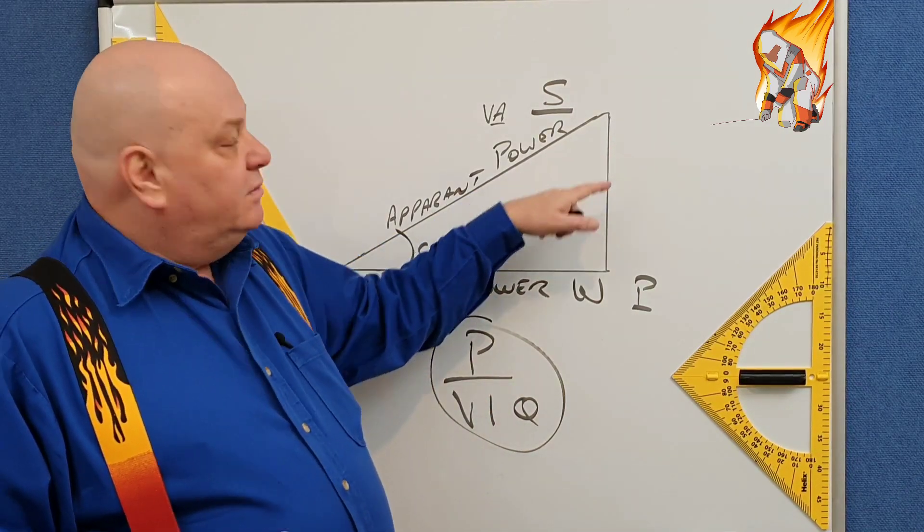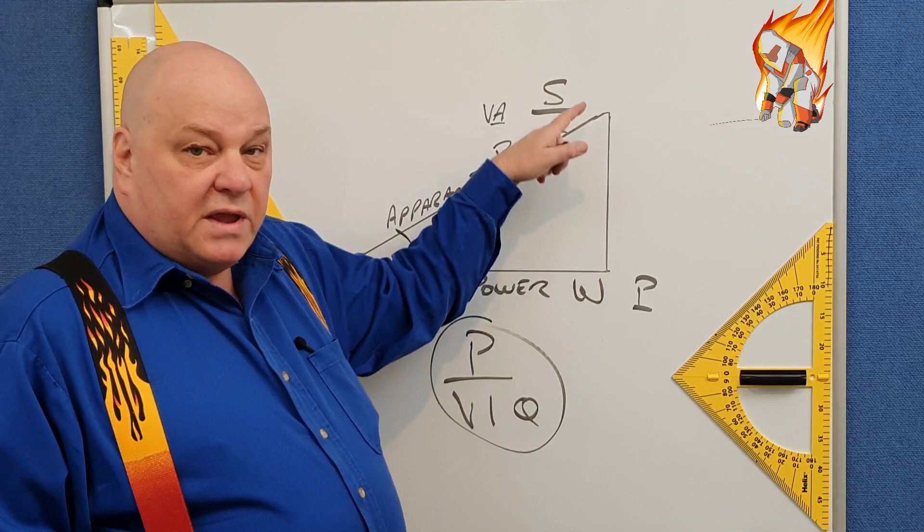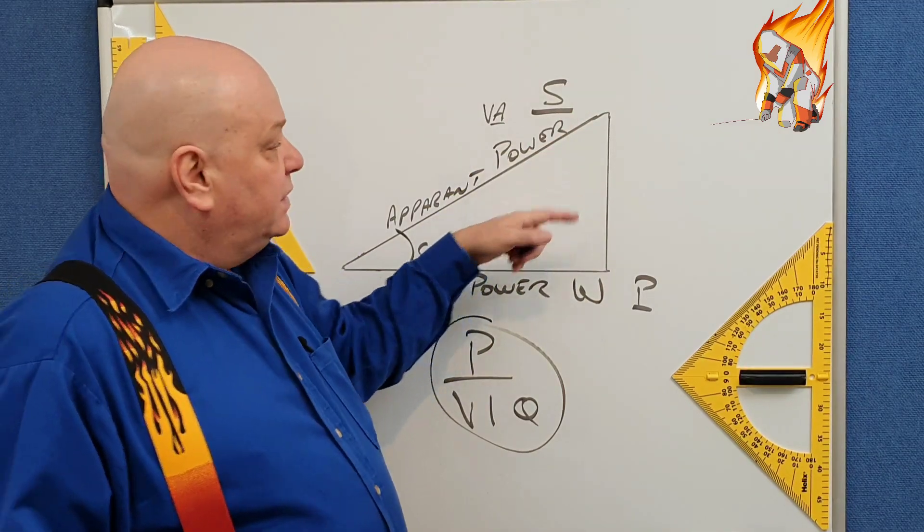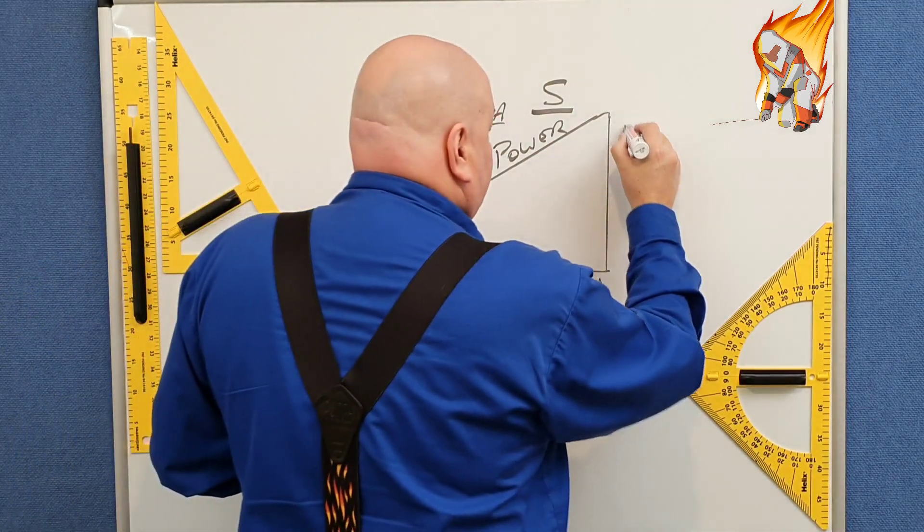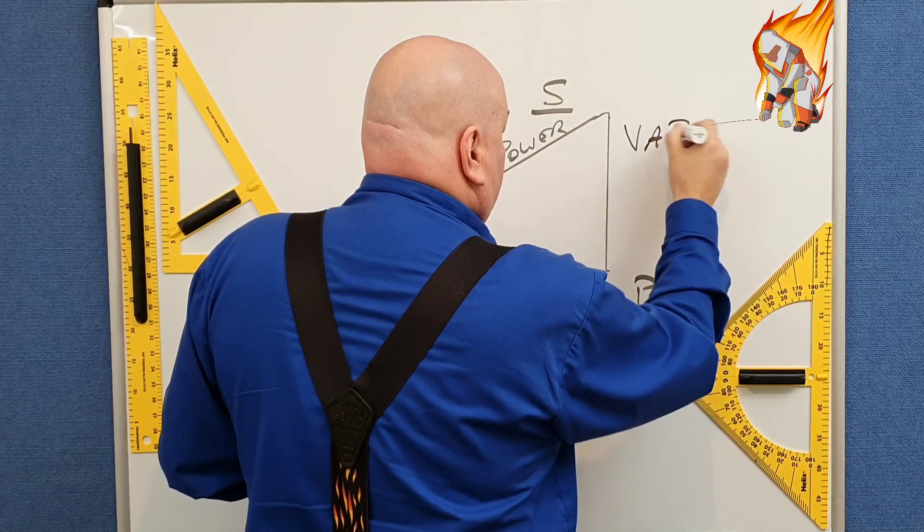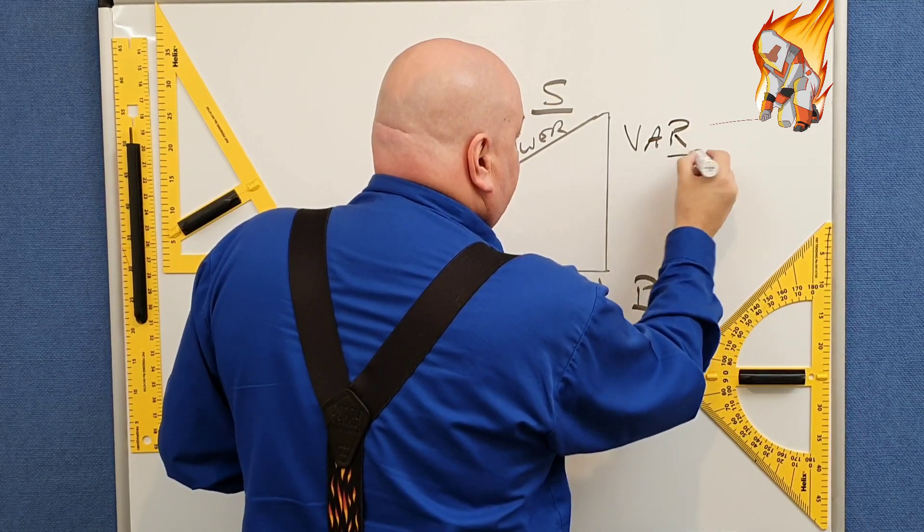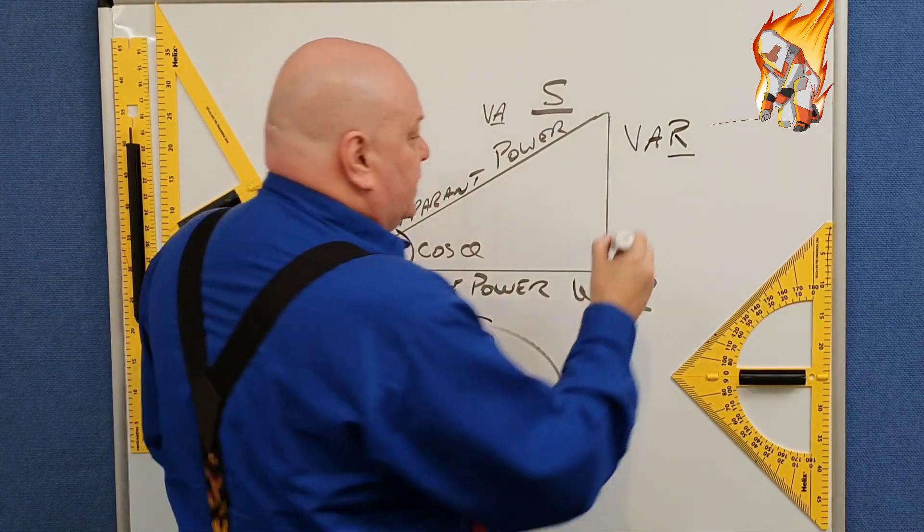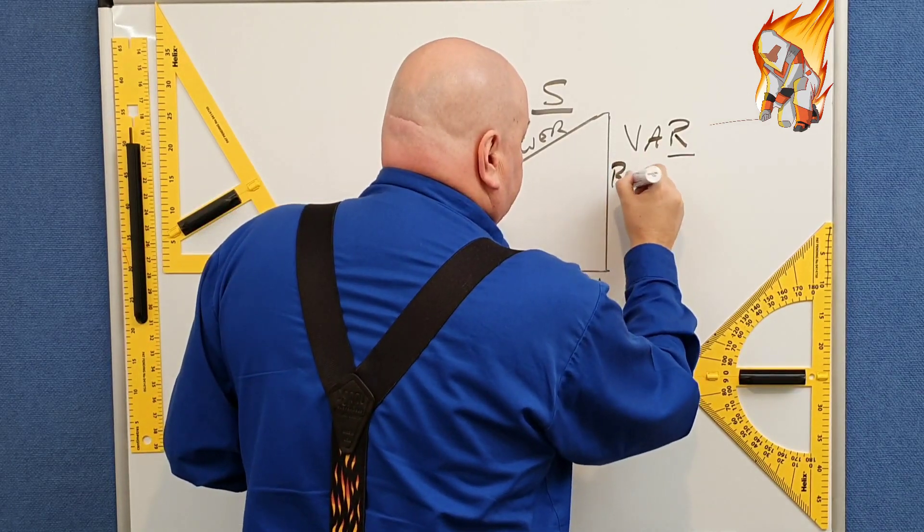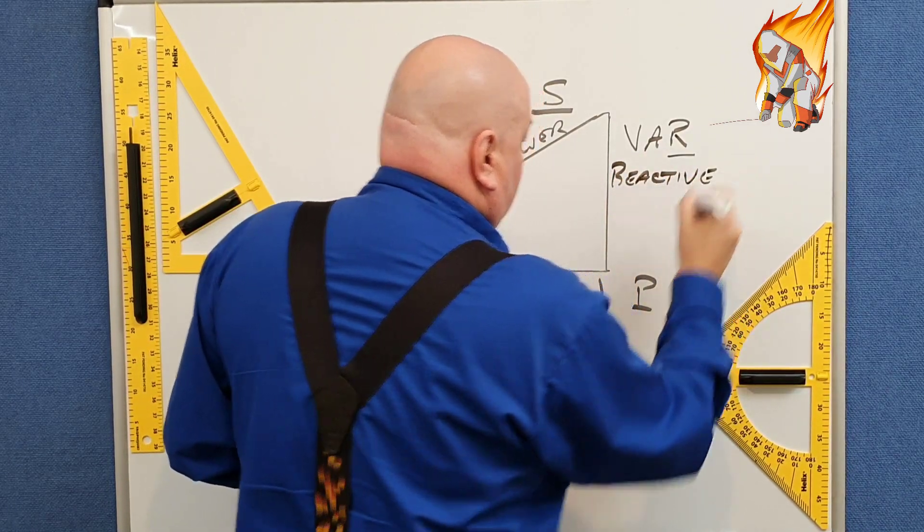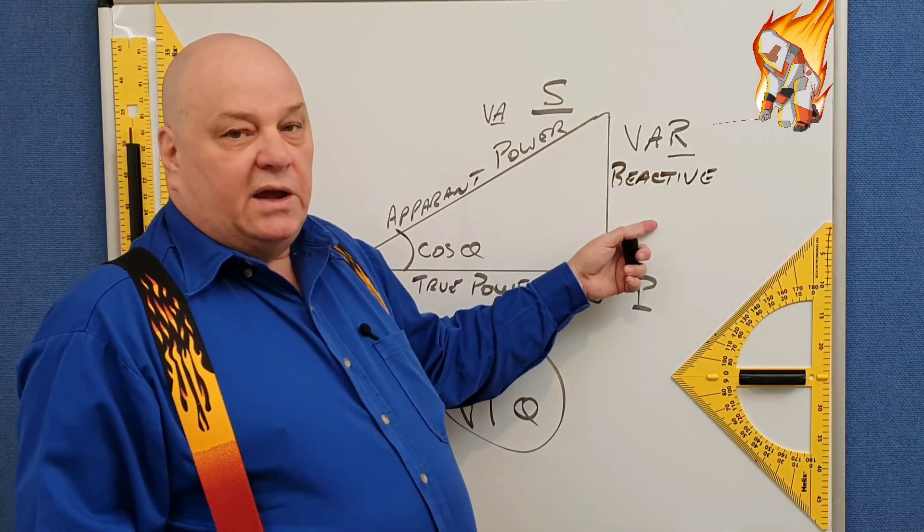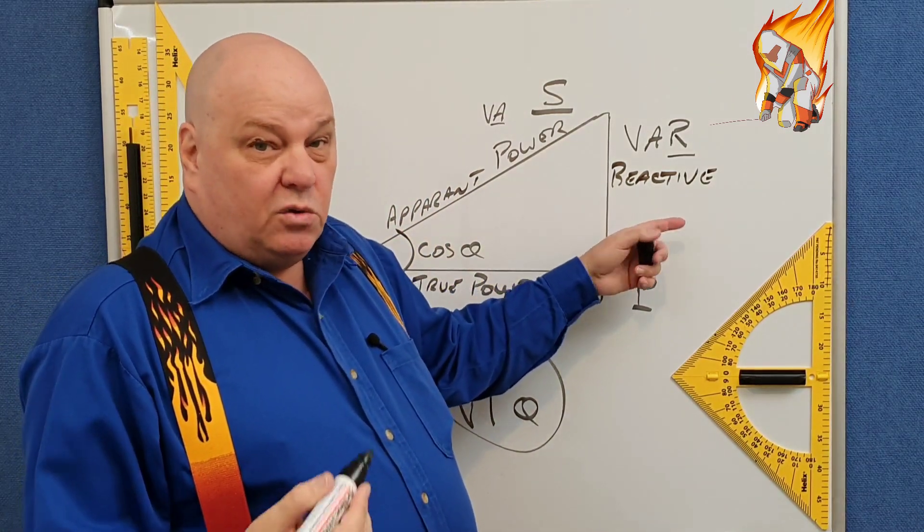On this side, this here is your reactive component. That's what's left. So this is your VARs. So think of VAR, VARs for reactive component. That's your reactive power. And if you like, think of that as quality.